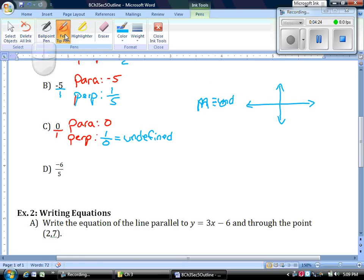You can see right there, they make a perpendicular angle. So the last one I put up here was negative six over five. Our parallel slope stays the same. Our perpendicular slope becomes five over positive six. So that's making parallel and perpendicular slopes.